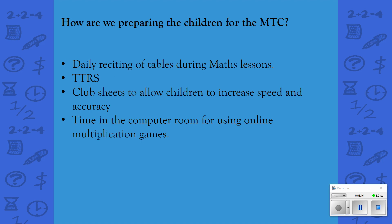So what are we doing in school to prepare the children for this test? We're doing daily work on times tables, reciting times tables during the maths lesson and any spare minute we get. We have subscriptions to TTRS — Times Table Rock Stars. We're completing a daily club sheet that's been done four times a week, and you've had information already regarding those sheets. We're completing those every day to help children increase their speed and accuracy of all times table facts up to 12 times 12. We're also planning time in the computer room for children to use online multiplication games to improve their speed and fluency.